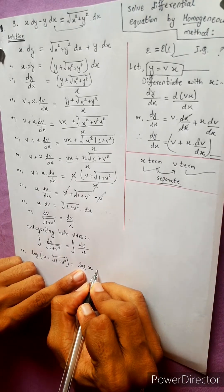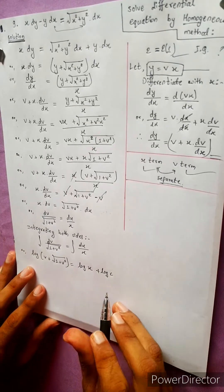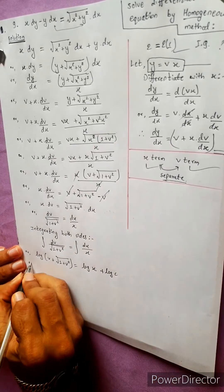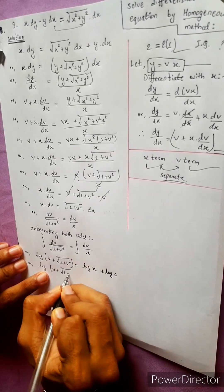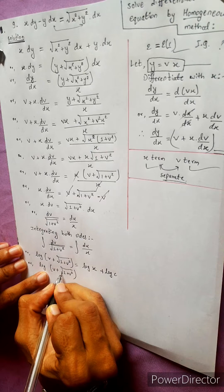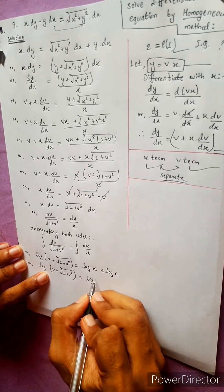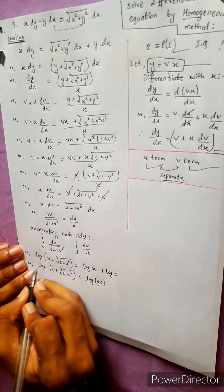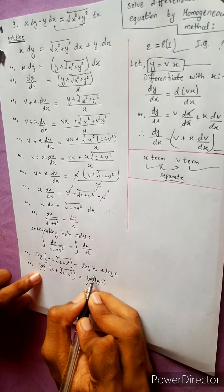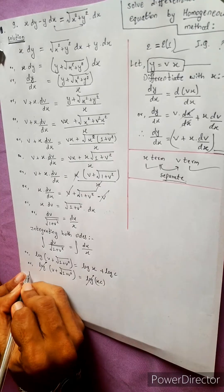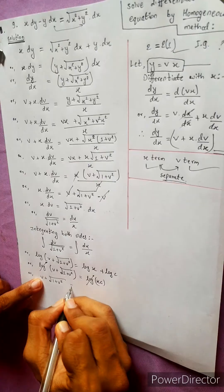Log x is equal to log c plus log c. This formula relates: log(v plus under root 1 plus v squared) equals to log(a times b) — using log multiplication rules — equals to log, and so: v plus under root 1 plus v squared equals to xc.